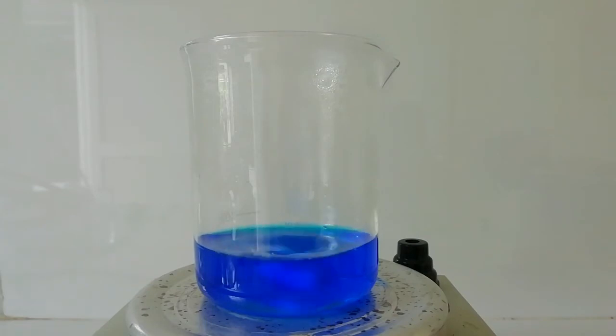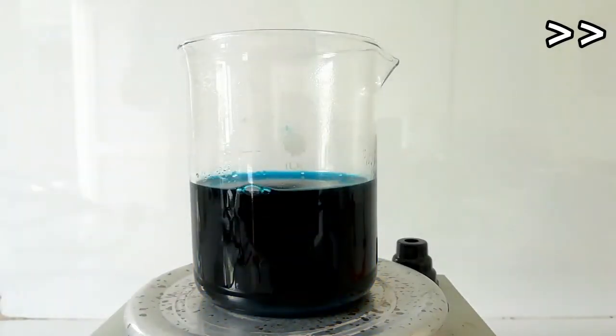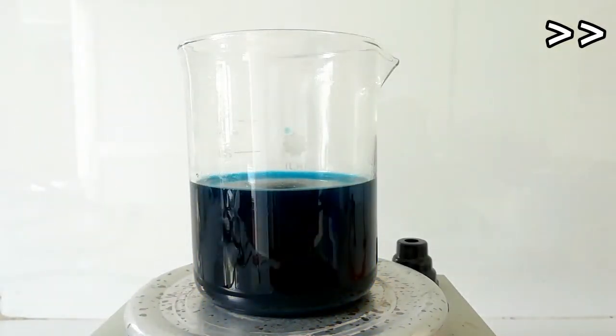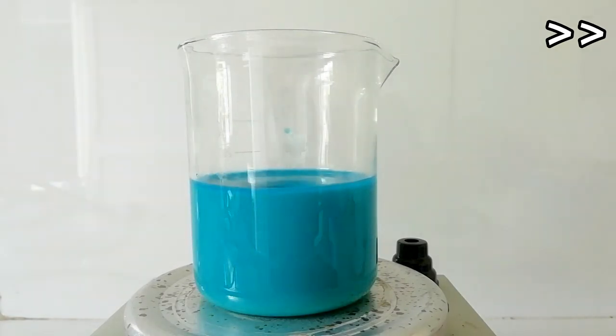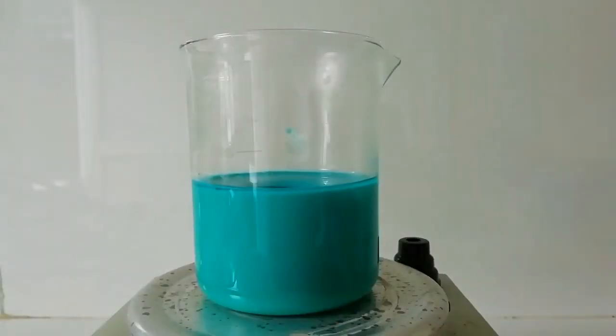Now I'm going to mix these solutions together and keep heating and mixing until we see a precipitate. Now you can clearly see the precipitate of copper citrate. This is more green in color than you see in the video.